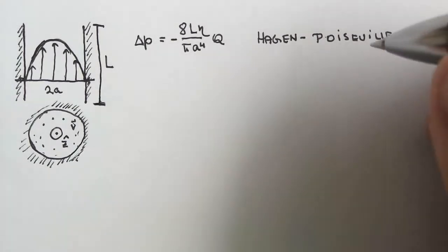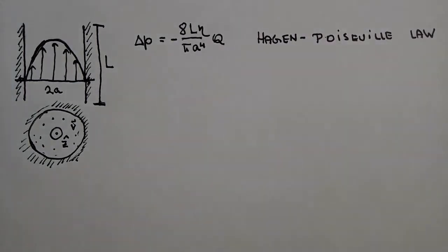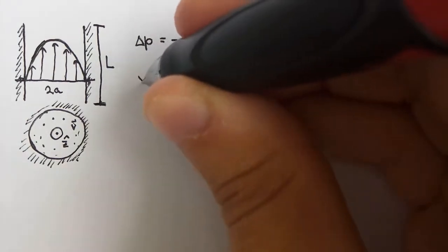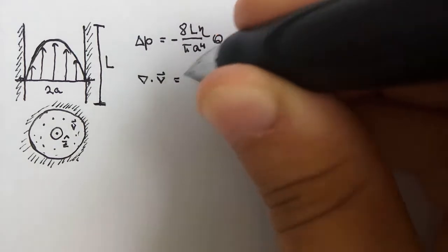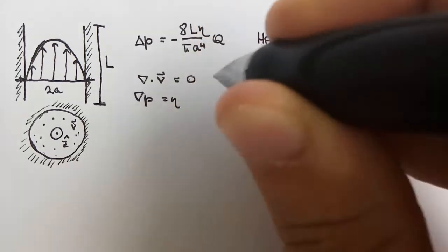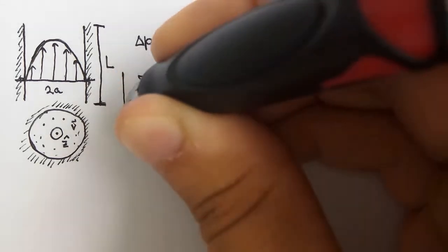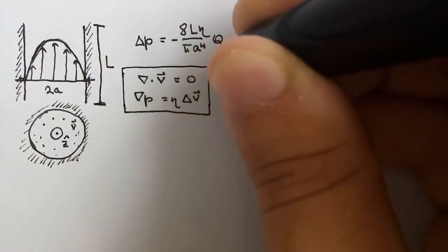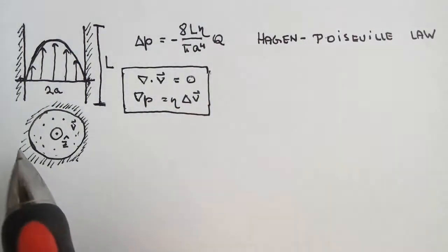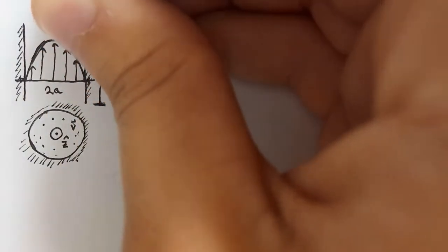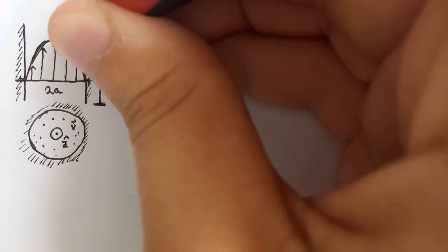As I derived in a couple of earlier videos on Stokes law, this one should be relatively straightforward. Recall the Stokes flow equations: divergence of V is zero, and the gradient of P is equal to eta times the Laplacian of V. We are going to solve these two equations. We will use polar coordinates, with Z along the tube axis and rho in the radial direction.